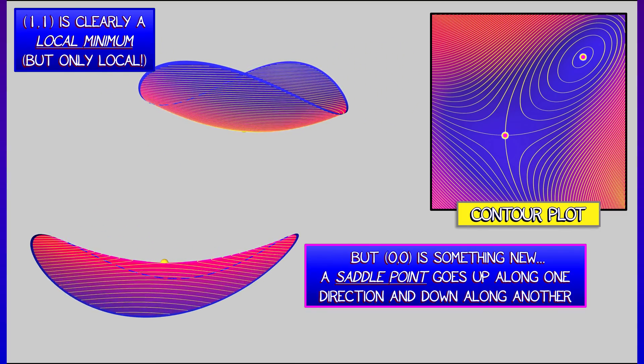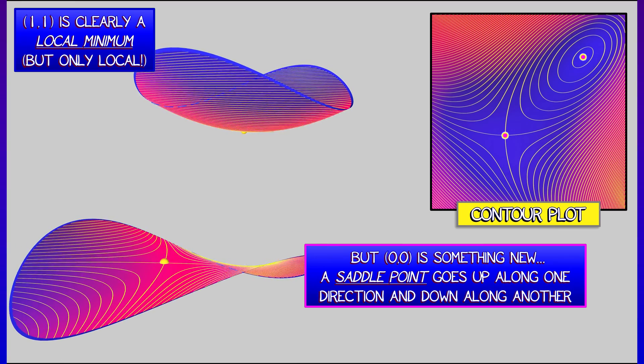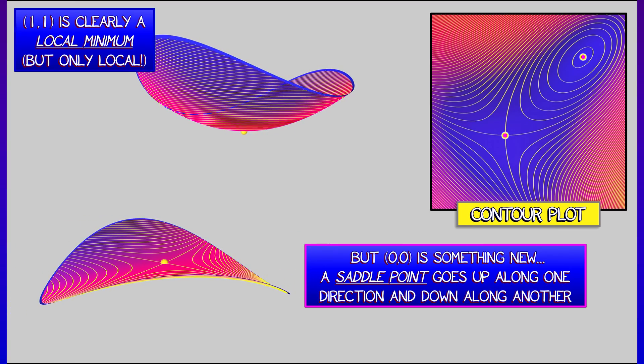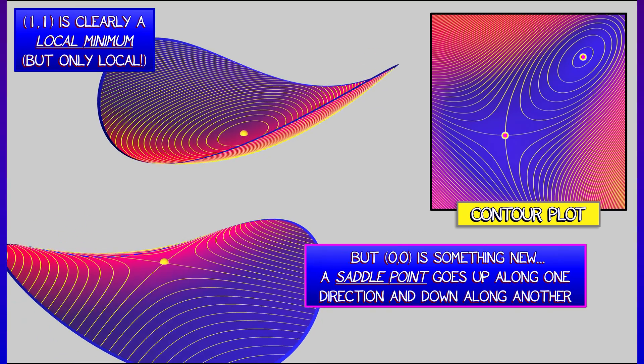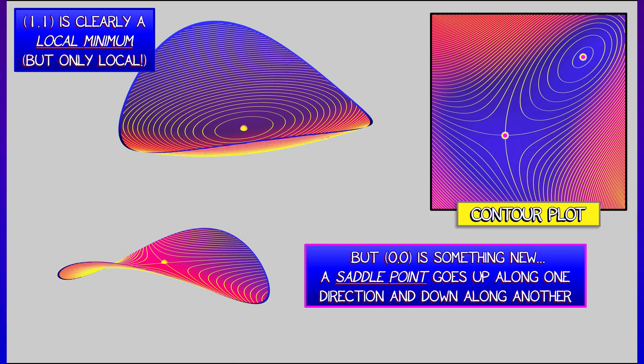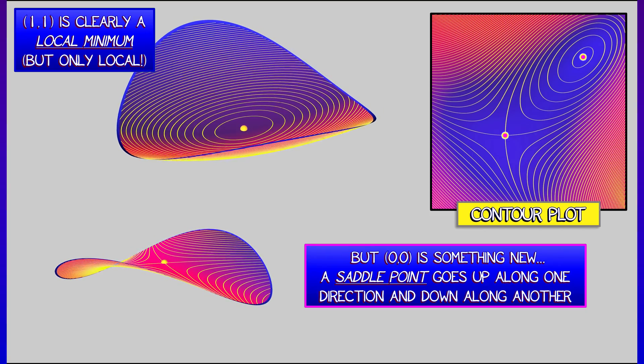It is called a saddle point. If you notice, it goes up along one direction, but down along another. It's something like a half max, half min, a hybrid sort of critical point.